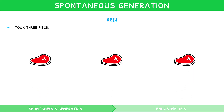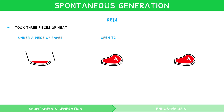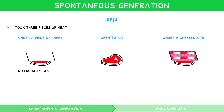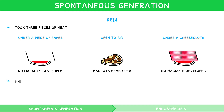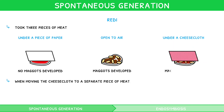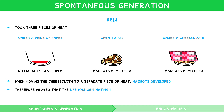Redi took three pieces of meat: one which was under a piece of paper, one was left open in air, and one was left under a cheesecloth. He then exposed these pieces of meat to flies, and found that no maggots developed on the piece under paper, maggots developed on the piece that was open to the air, and no maggots developed on the piece covered with cheesecloth. But when moving the cheesecloth to a separate piece of meat, maggots developed. He therefore proved that the life was originating from the fly eggs, disproving spontaneous generation.